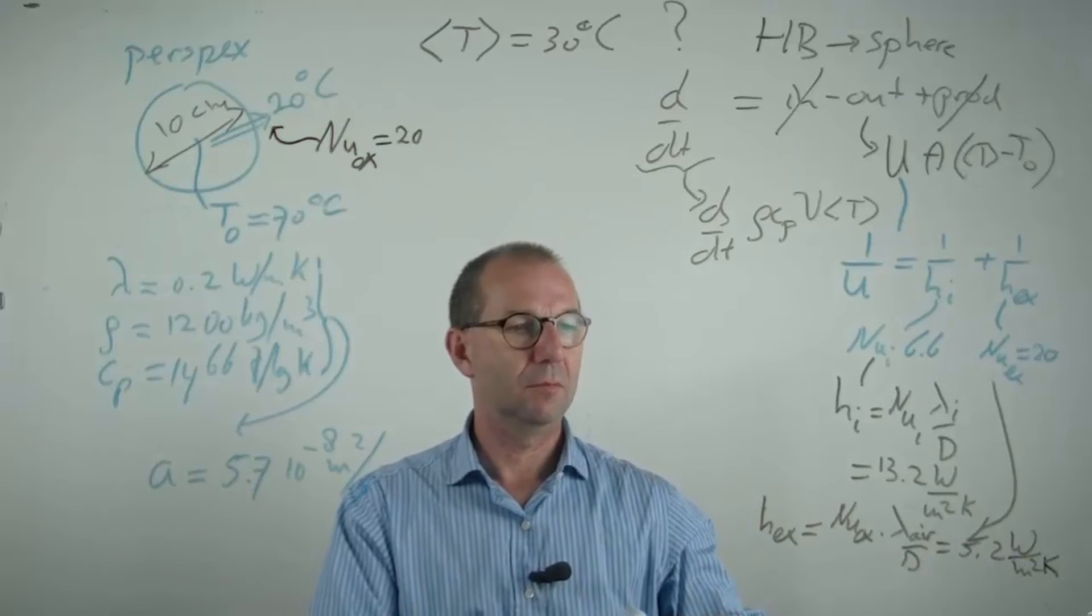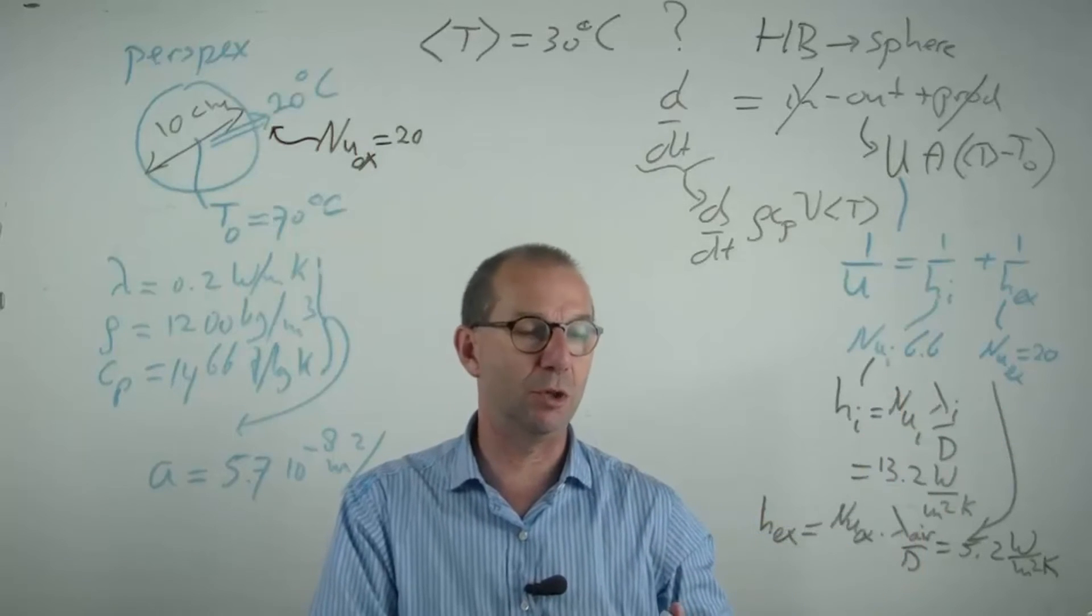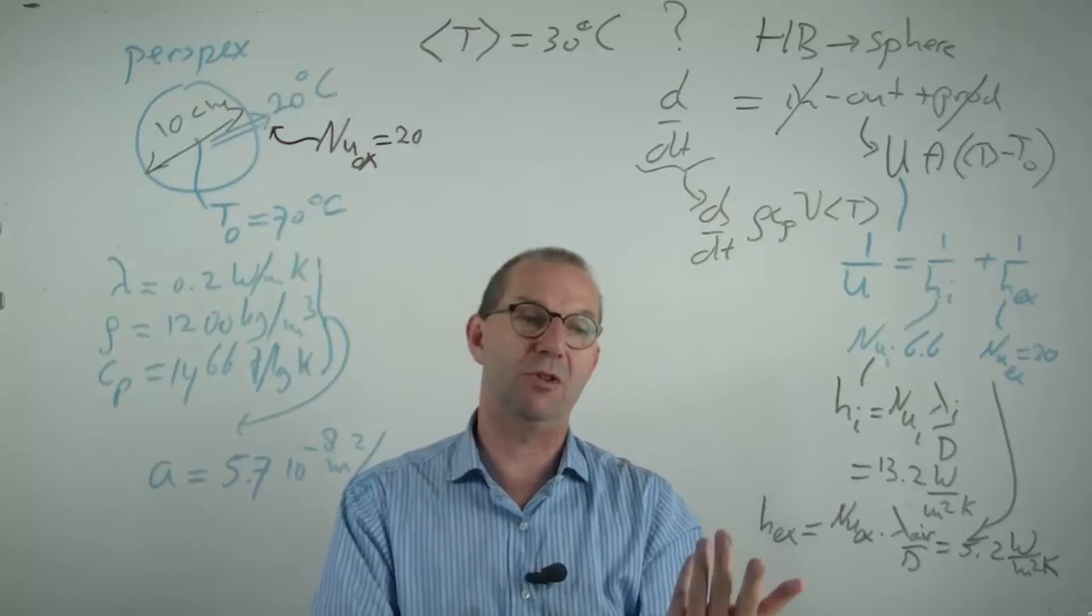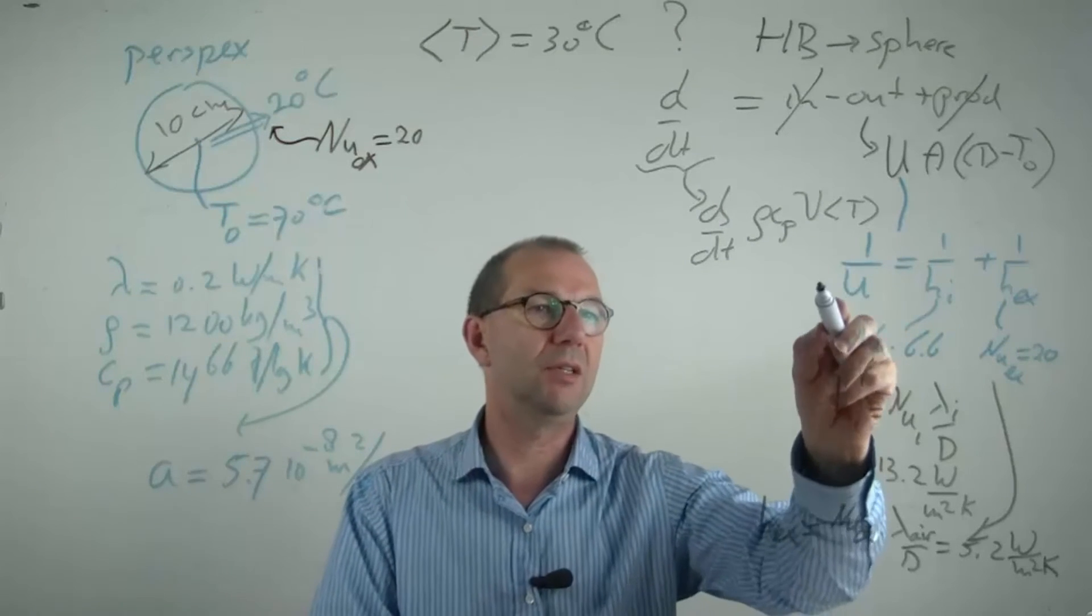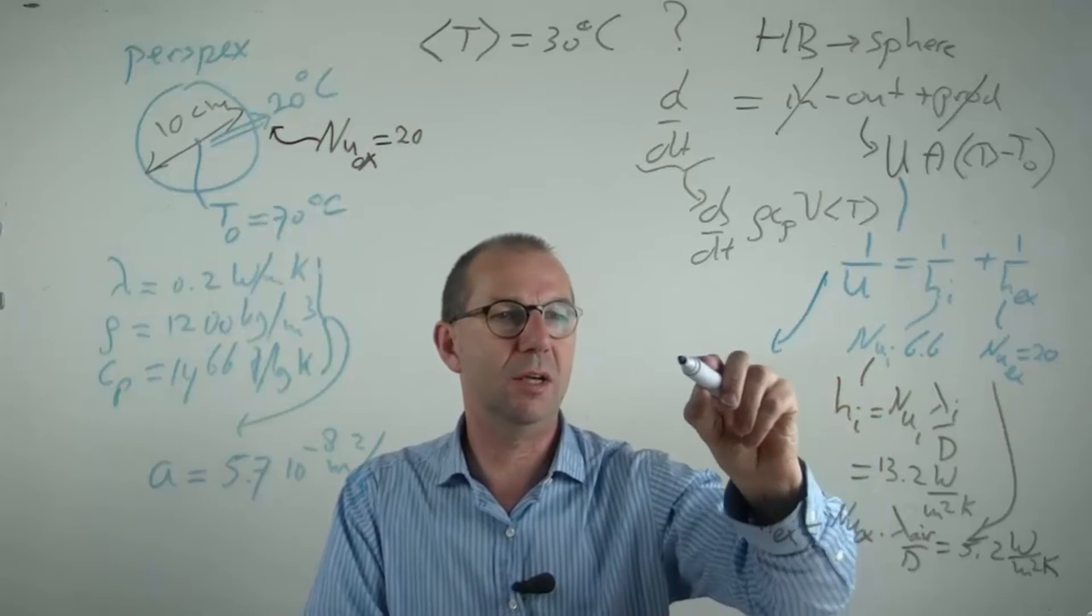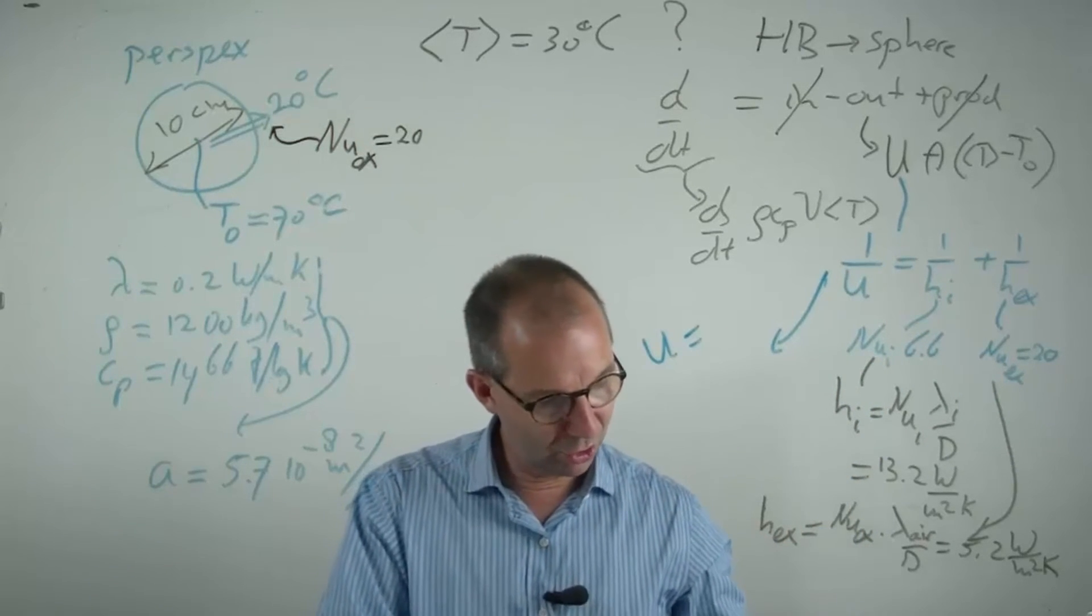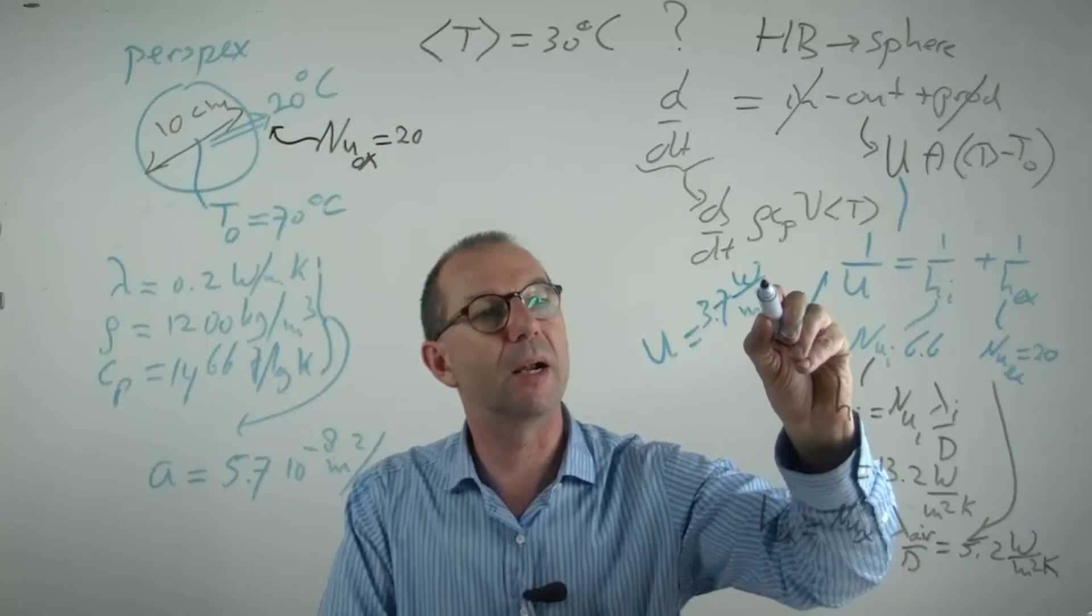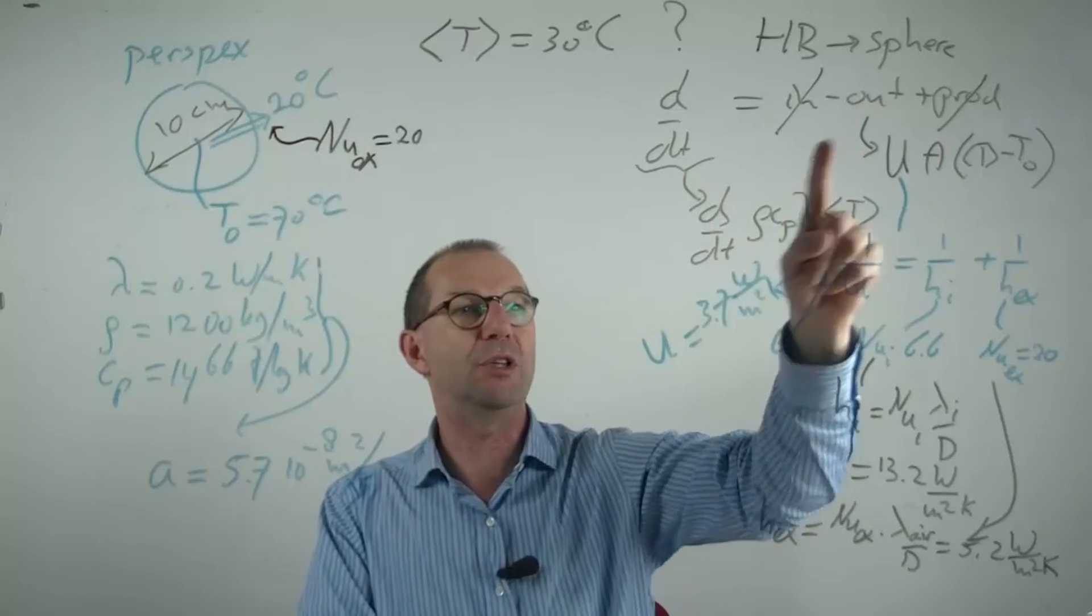Ah, these are roughly the same. So I cannot scratch out one of the two and pin down that the resistance is either inside or outside. The resistances are more or less the same. So I need to have U. But I just use this and find my U. It is 3.7 Watt per meter square Kelvin. And it's a constant.